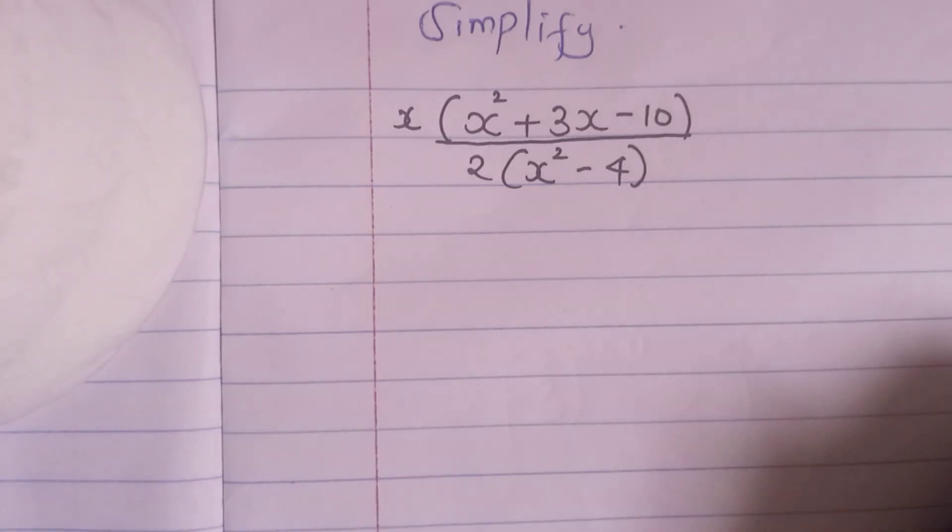Hello, welcome or welcome back to my YouTube channel and thank you for clicking in. So today we want to simplify this algebraic expression. We have x into bracket x squared plus 3x minus 10 divided by 2 into bracket x squared minus 4. And I want us to simplify this expression.